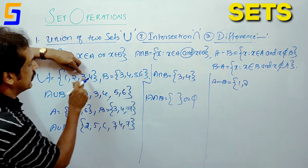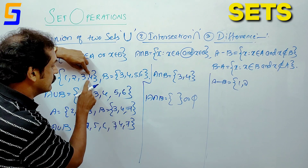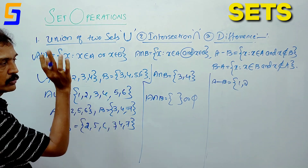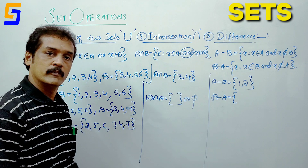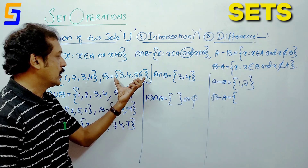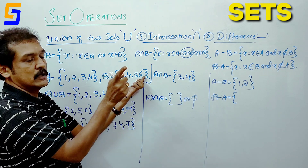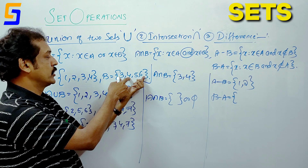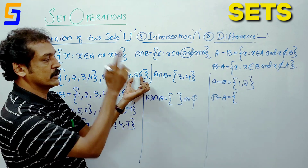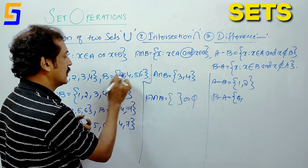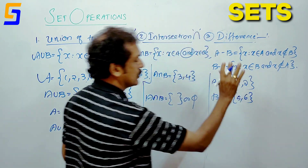If you have A-B with 3 equal, we will get A minus B. Elements 4, 5, 6 are identified here. A minus B and B minus A — this is the difference between the two sets.